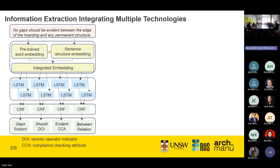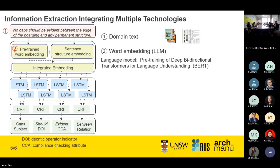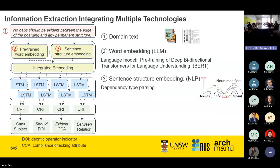Here is an example of how we combine different technologies in the information extraction process. In the first step, we input sentences from the specifications into the network to extract different types of features, including word-level and sentence-level features, which are combined and fed into the neural network. For word-level features, I use the large language model — specifically the BERT model, which is very popular and has set many benchmarks across different NLP tasks, making it a standard in this field. For sentence structure features, I use dependency type parsing.